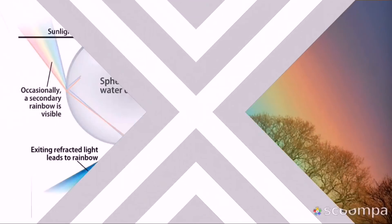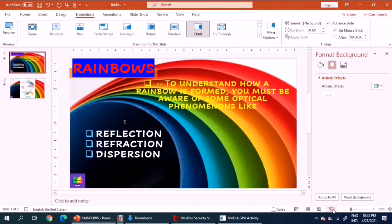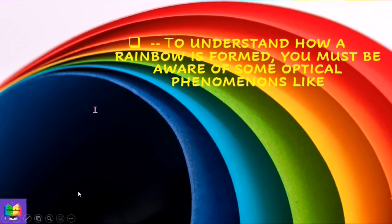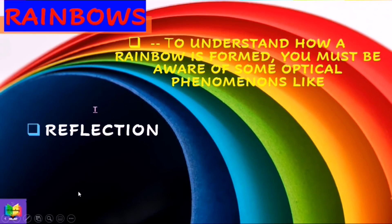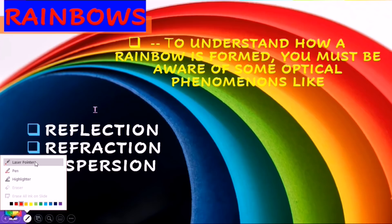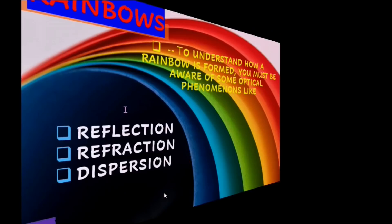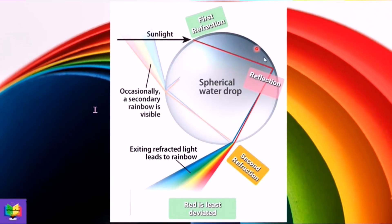Now let's see how a rainbow is formed. In order to understand this, you must be aware of some optical phenomena like reflection, refraction, and dispersion. Let's see what happens when white light or light from the sun is incident at a water droplet.